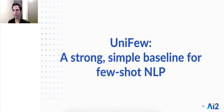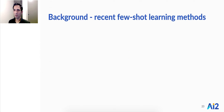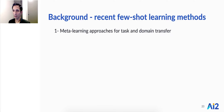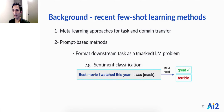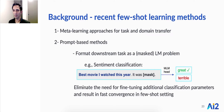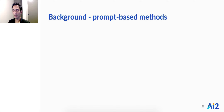I will now present Unifew, our simple yet strong baseline for few-shot NLP that can perform well on all transfer settings. Recent few-shot learning methods in NLP fall into the following categories: first, meta-learning approaches for task and domain transfer, and second, prompt-based methods. Prompt-based methods format downstream tasks as a masked language modeling problem, eliminating the need for fine-tuning additional classification parameters and resulting in fast convergence in few-shot settings. However, finding the right prompt is tricky, and previous work has shown that these models are very sensitive to the choice of prompt.